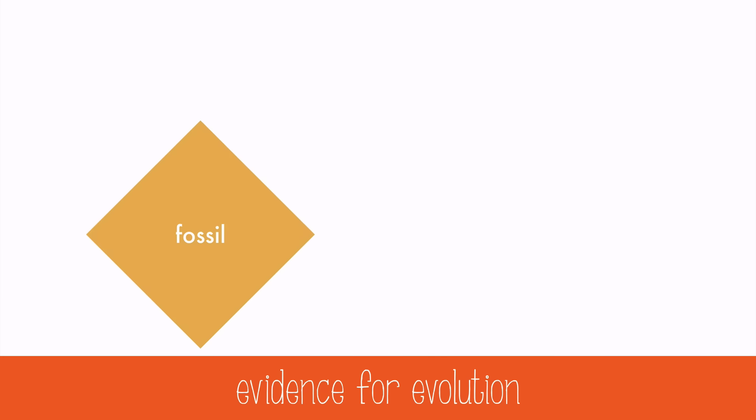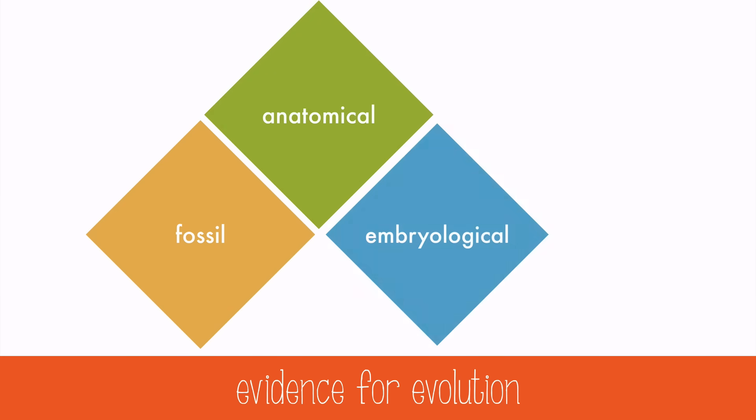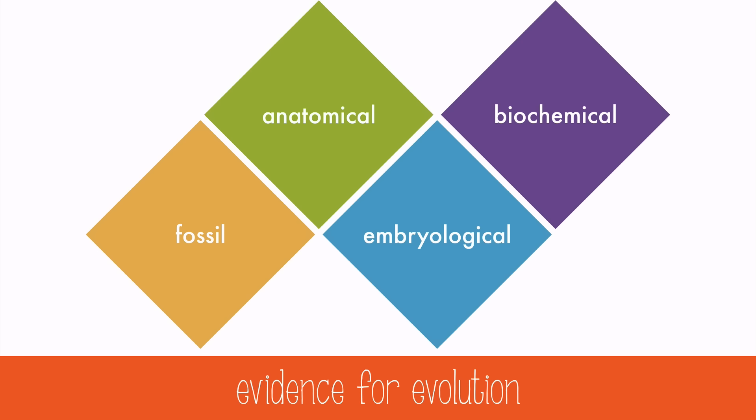There are four major categories of evidence for evolution: fossil evidence, anatomical evidence, embryological evidence, and biochemical evidence. Let's look at fossil evidence first.